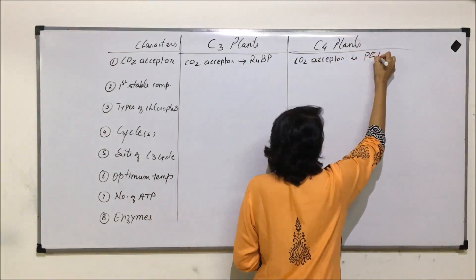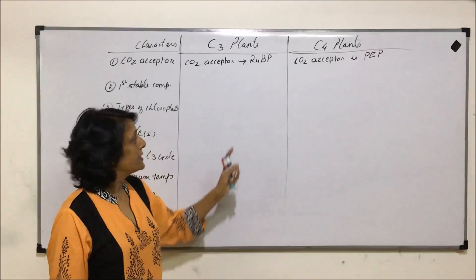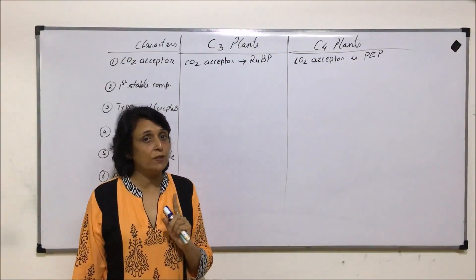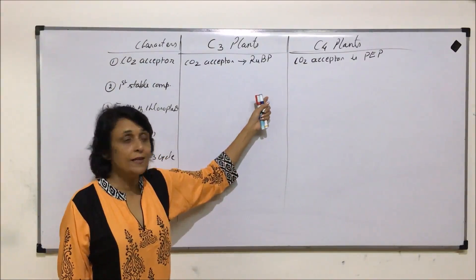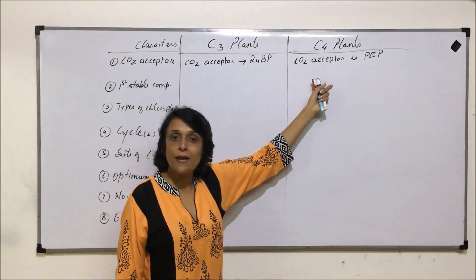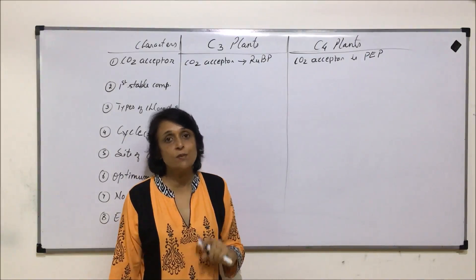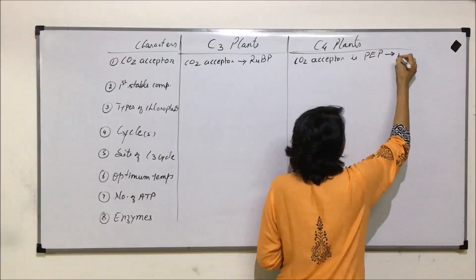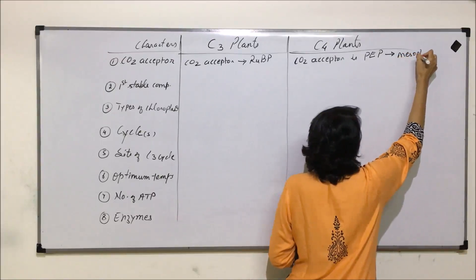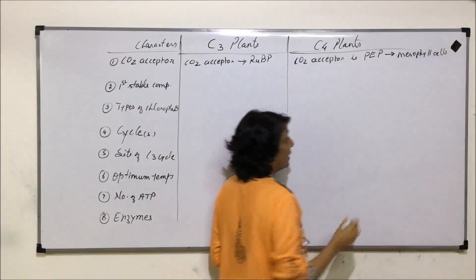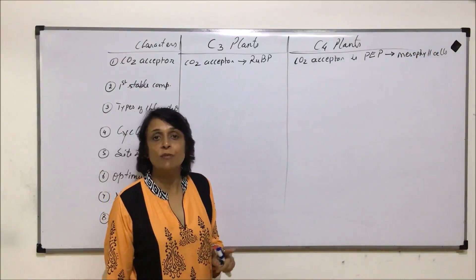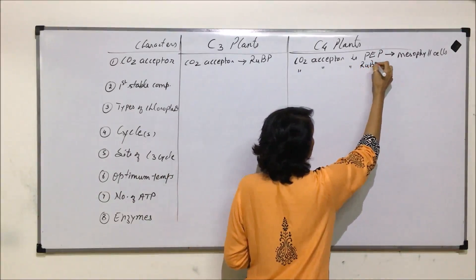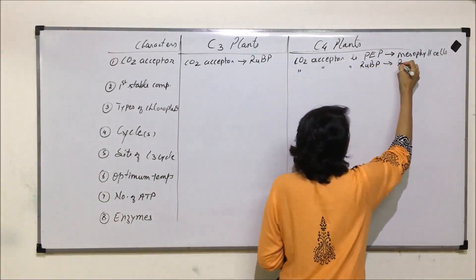As we have seen in the entire cycle, in C4 plants carbon dioxide is accepted two times: first in the mesophyll cells by phosphoenol pyruvate, and next in the bundle sheath cells by RUBP. So the first carbon dioxide acceptor is PEP in mesophyll cells, and RUBP is the acceptor in bundle sheath cells.